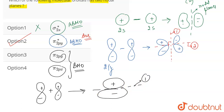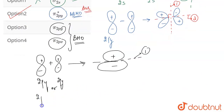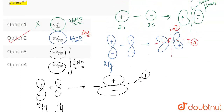So this is one nodal plane that we get for π2py. The same is true for π2px — both are going to have only one nodal plane, and the orbitals will be drawn in the same way. So basically, π2py and π2px each have one nodal plane, σ*2s also has one nodal plane, but π*2py has two nodal planes — and that is the correct answer.